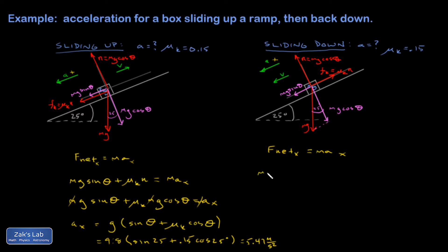So again, I'm calling down the ramp positive. So I have mg sine theta is positive, but my friction force counts as negative. Plug in the normal force. Cancel the mass out. And I get that ax is g times the quantity sine theta minus mu k cosine theta.